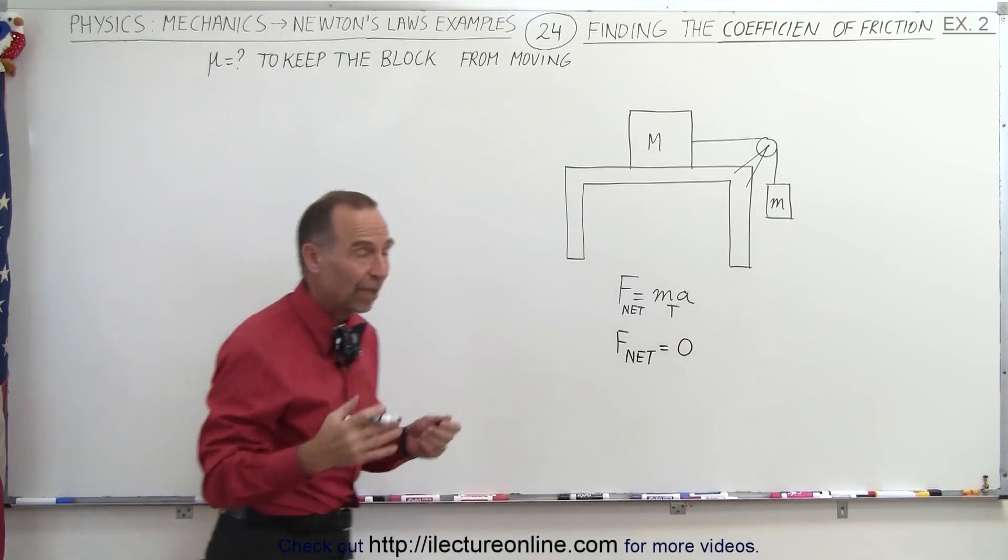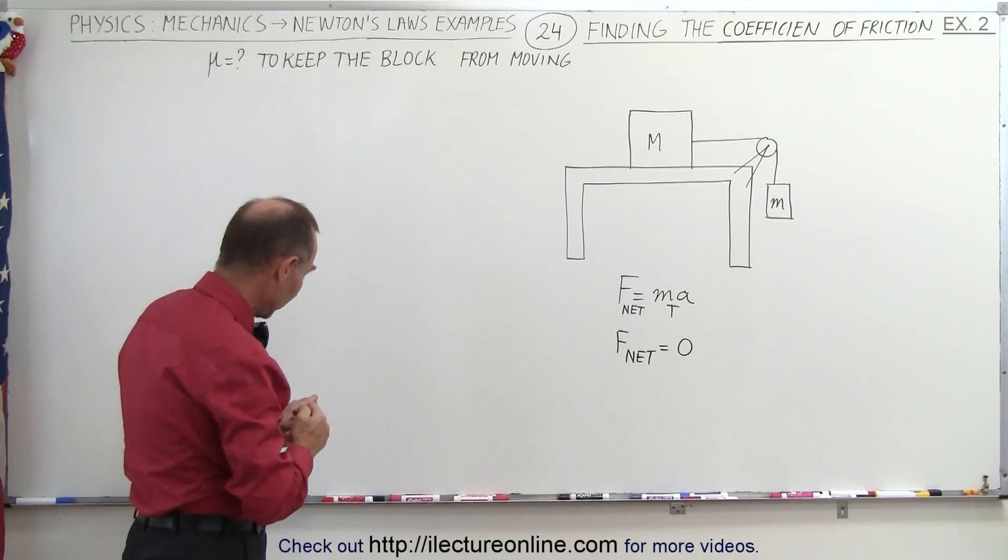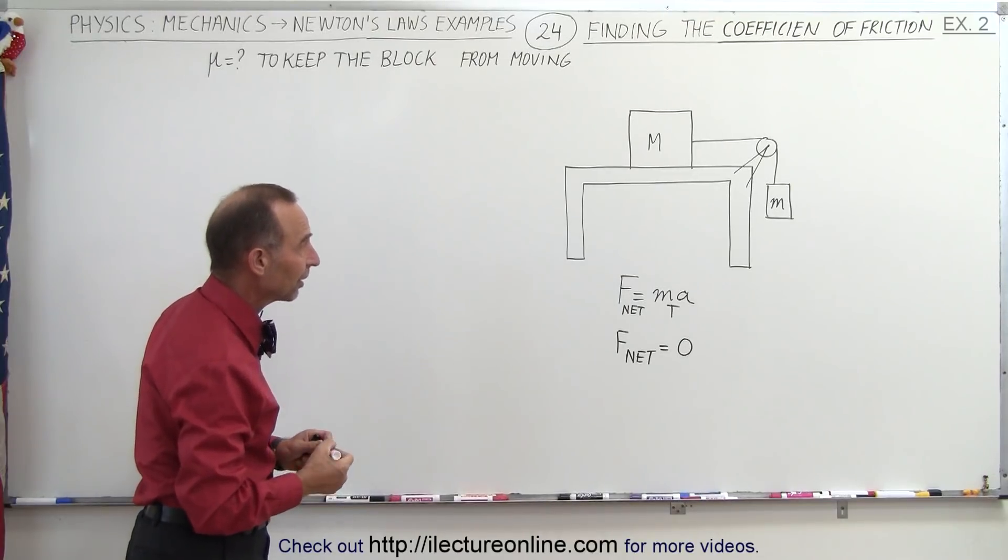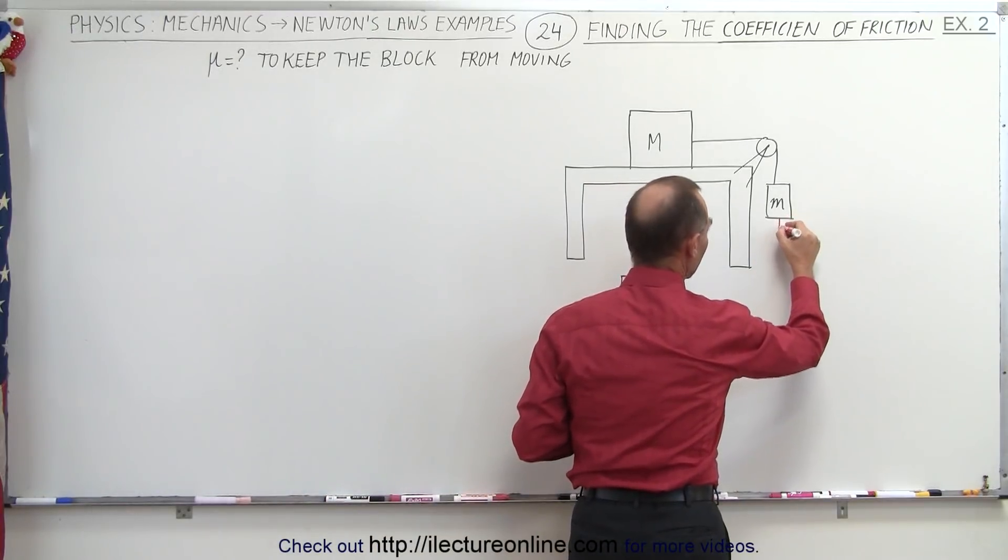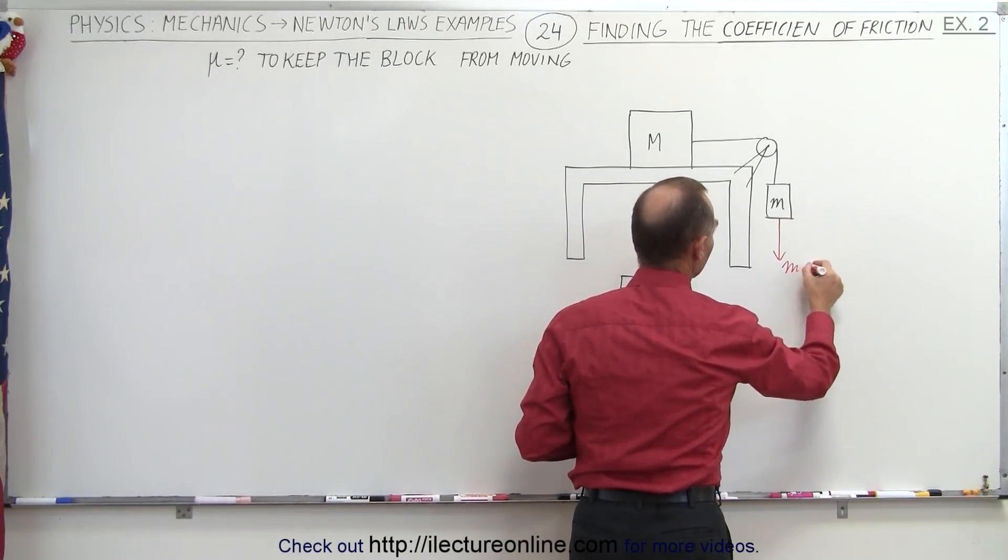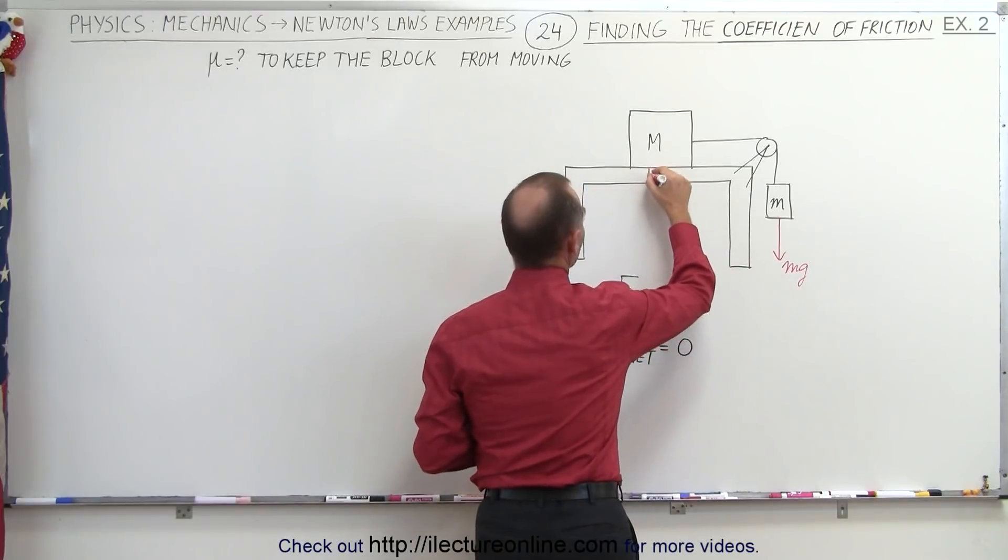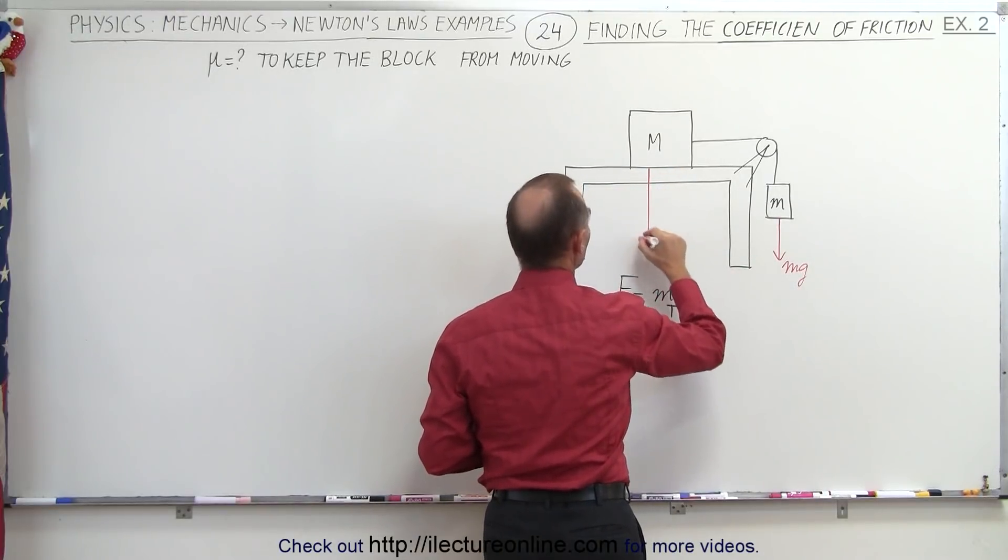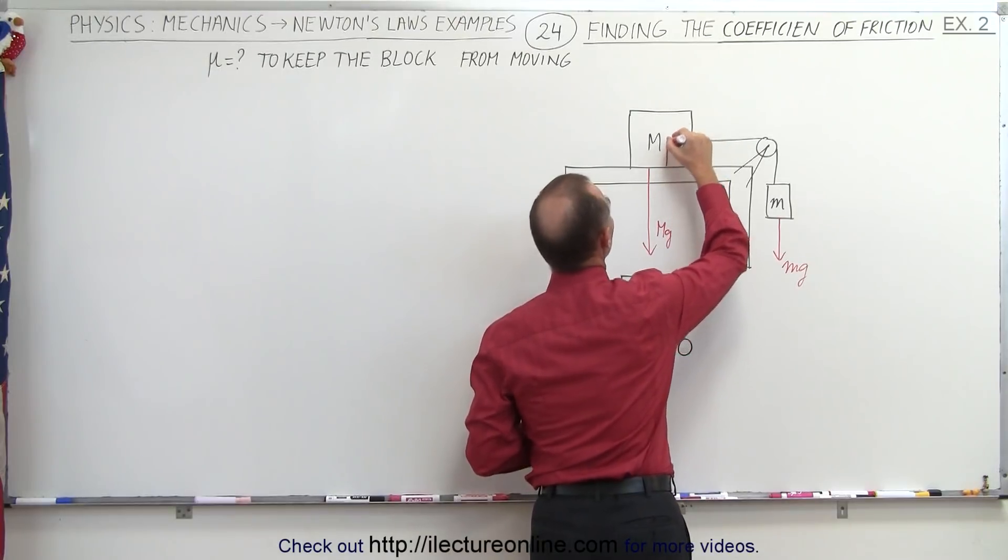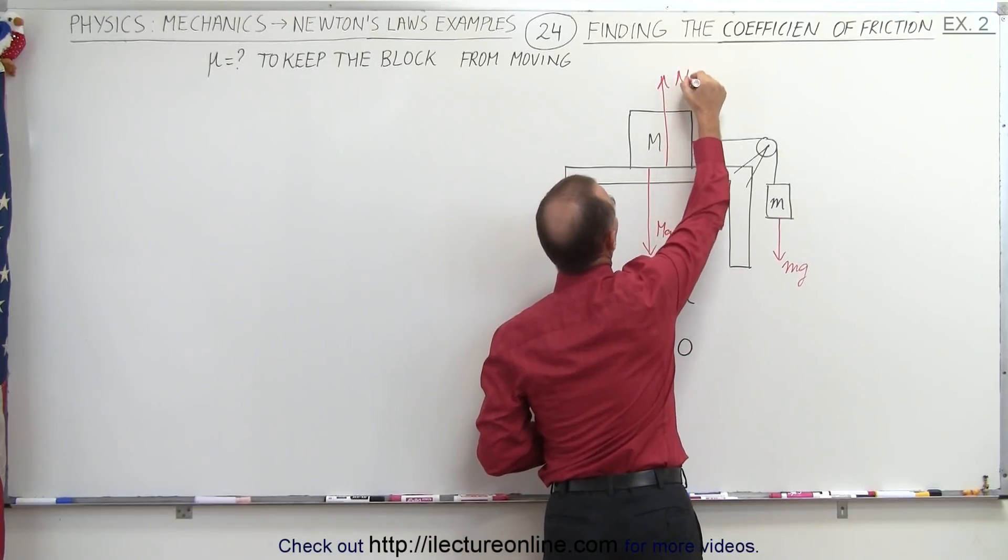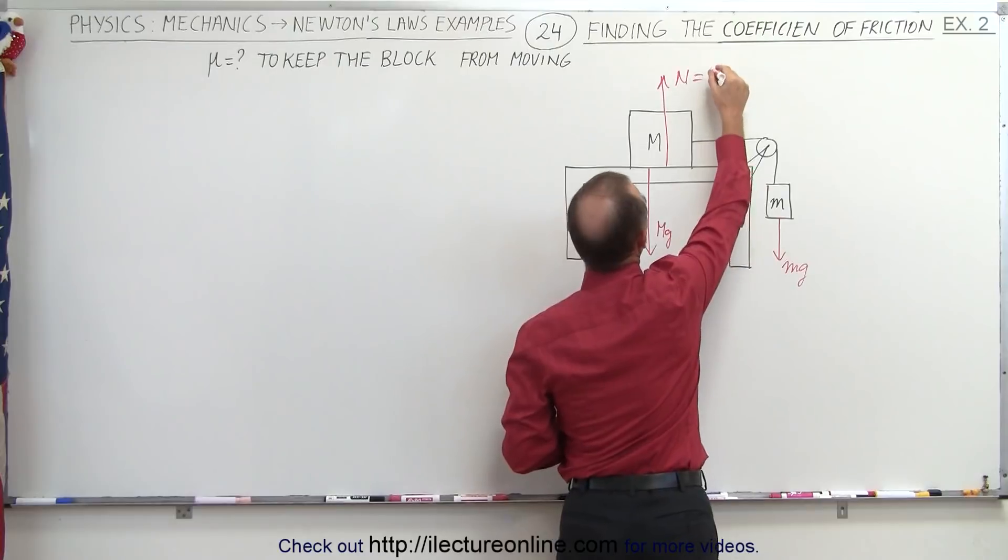Now what is the net force acting on this system? Let's go ahead and draw some of the forces on there to see how we can find F net. Well, we have the force of gravity pulling down on the small block and we have the force of gravity pulling down on the big block. That would be big Mg. That would be the normal force pushing back from the surface, and the normal force would be equal to the force of gravity big Mg.